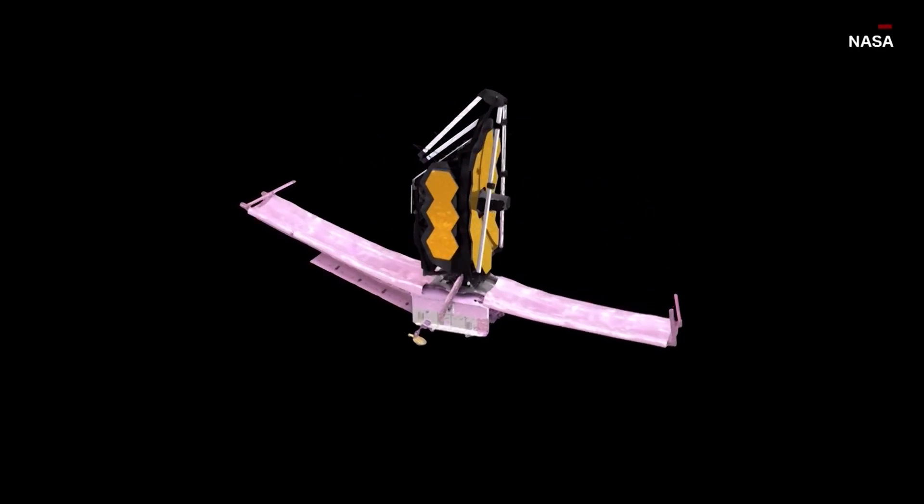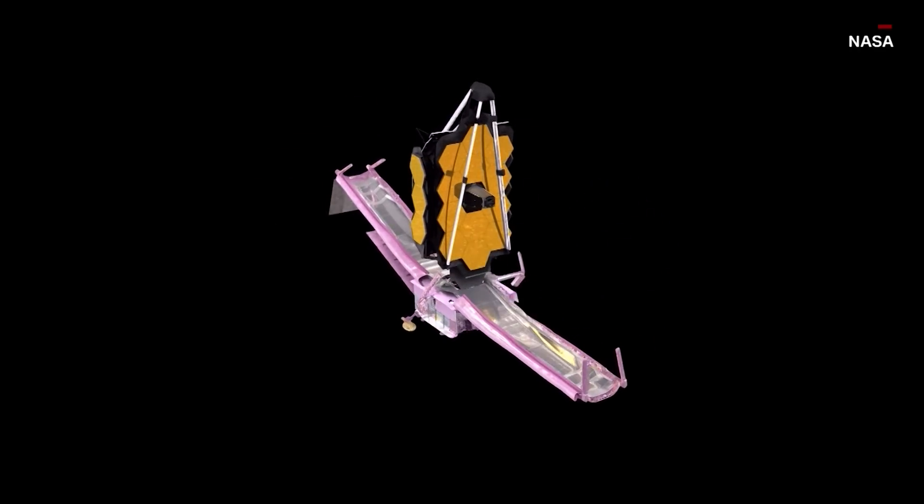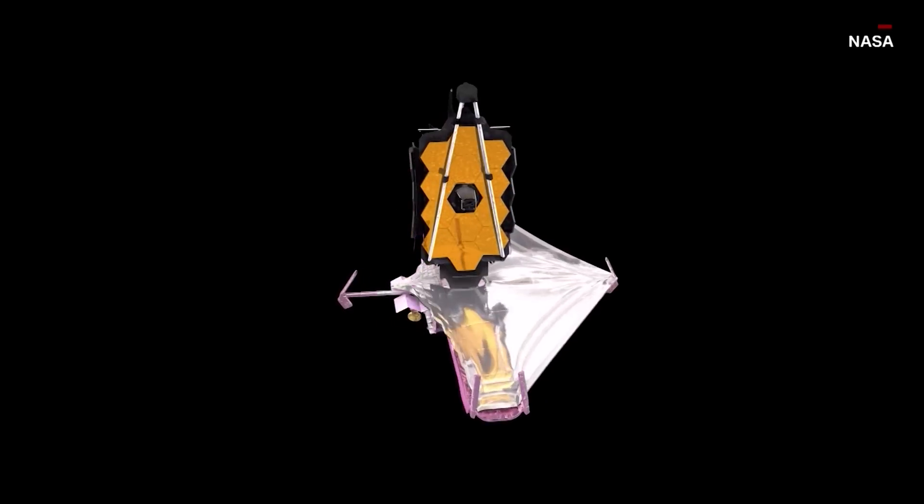After months of teasing, NASA finally revealed the very first full-color image taken by the James Webb Space Telescope. And man, oh man, was it worth the wait.